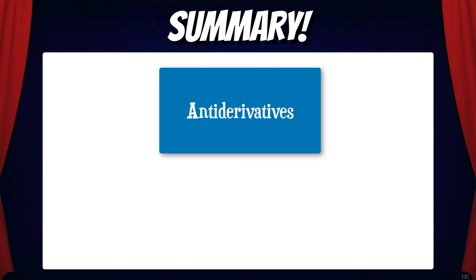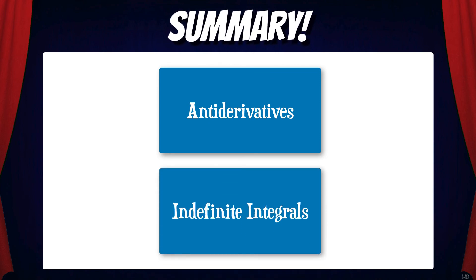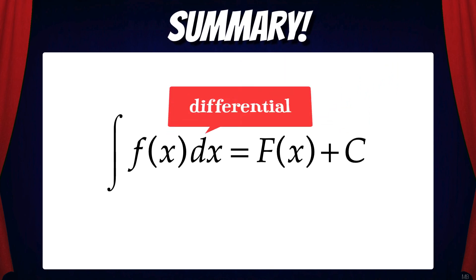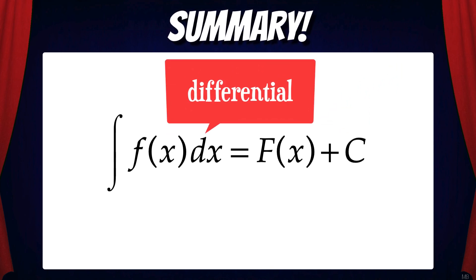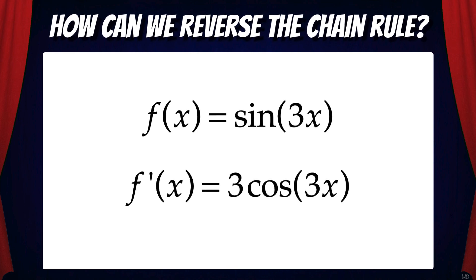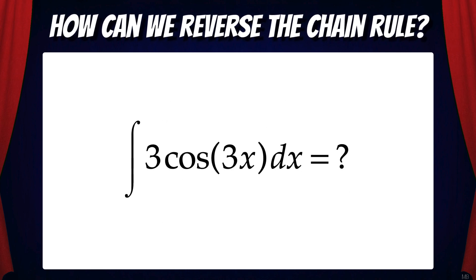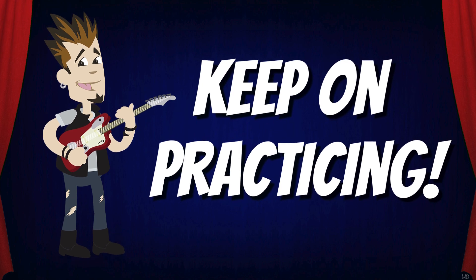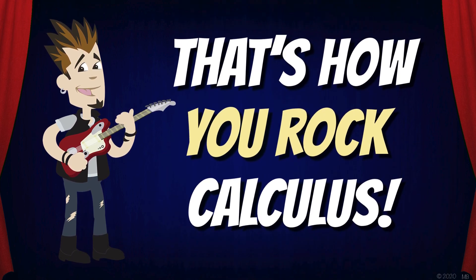So let's summarize. In this video, we've started to look at how we can find antiderivatives of functions — antiderivatives are also called indefinite integrals, and you always need to include plus c. We've also talked about how integrals must contain a differential; here we've seen integrals with dx, which for now we consider as necessary notation. In the next video, we're going to talk about how to reverse the chain rule — suppose we have a function whose derivative requires the chain rule; how can we find the antiderivative? Keep practicing to get used to indefinite integrals and antiderivatives. And that's how you ROCK CALCULUS!